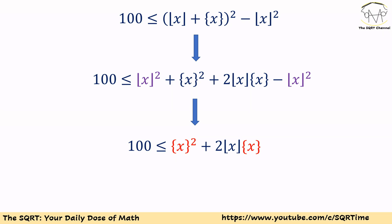From here we are going to use (a + b)² = a² + b² + 2ab. If we expand and simplify, the floor of x squared terms cancel, and we just have: fractional part of x squared plus 2 times floor of x times fractional part of x. So 100 is less than or equal to this expression.